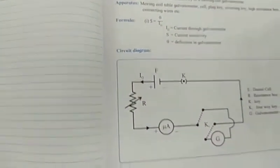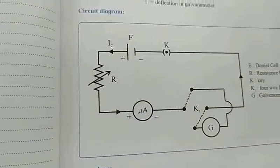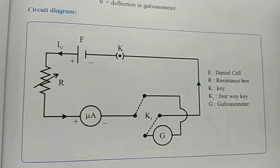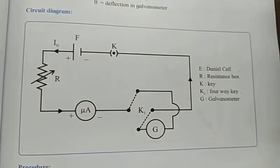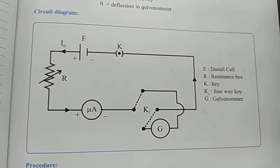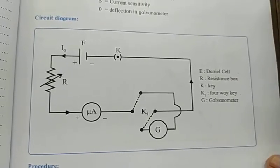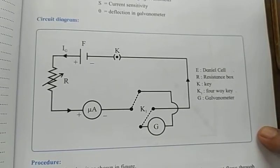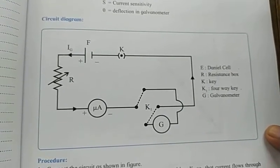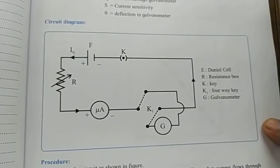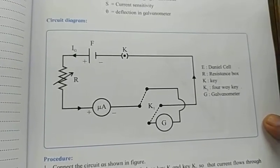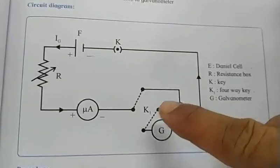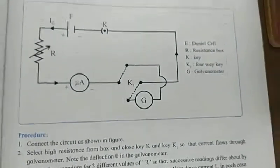Now let us look at the circuit diagram. It is a very simple circuit consisting of a battery, a variable resistance — for which we will be using a resistance box — a micro ammeter ranging 0 to 500 microamperes, a galvanometer whose current sensitivity we have to determine, and a 4-way key.